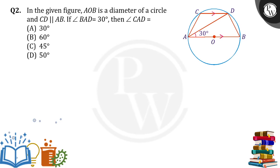Hello everyone. In the given figure, AOB is the diameter of a circle and CD is parallel to AB. Angle BAD is equal to 30 degrees. Then angle CAD is equal to how much?